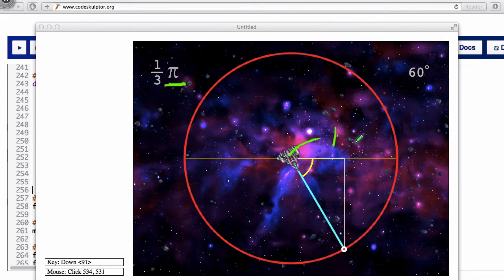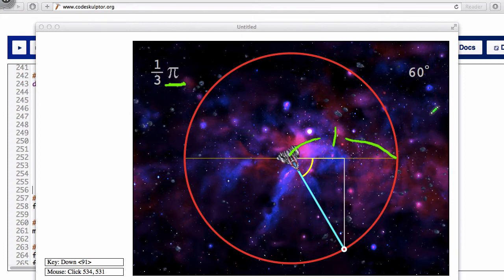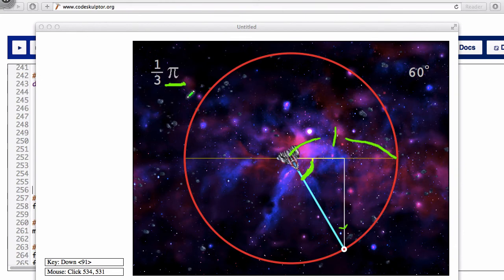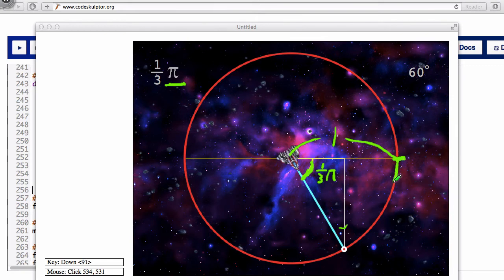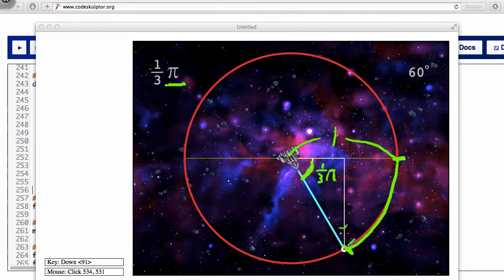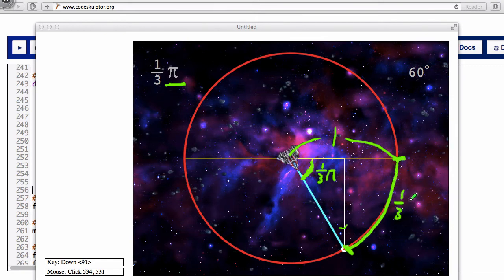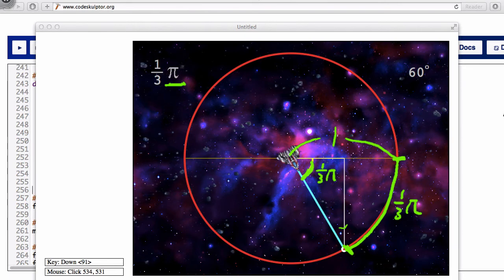Suppose this is 1, again we have our circle of radius 1, and this is our angle, and here it tells us that the angle is 1/3 pi. What that means is that this arc here, from this point to that point, the length of this arc is 1/3 pi.